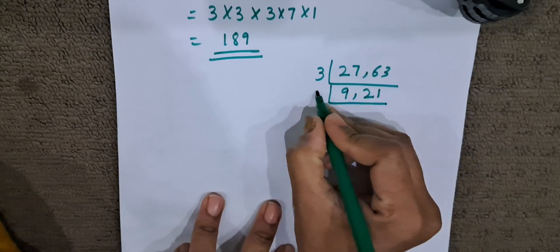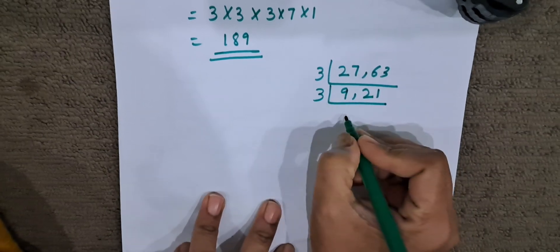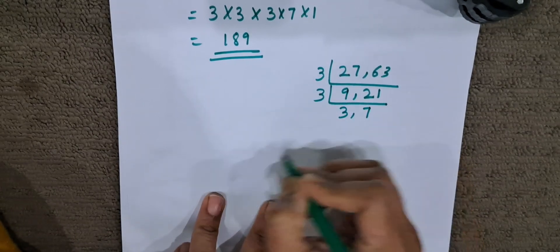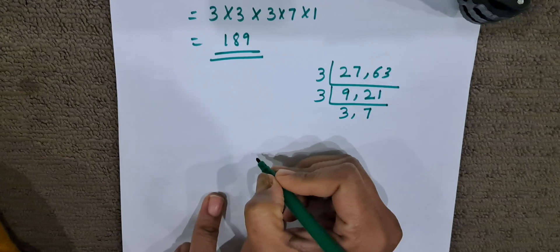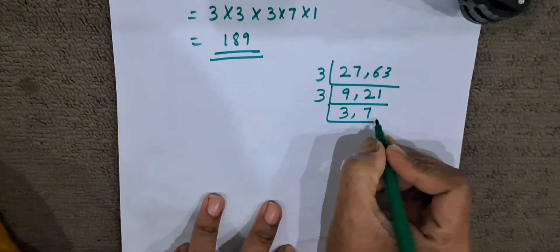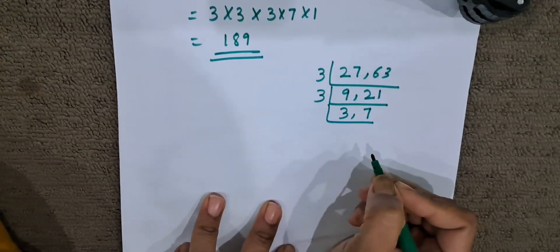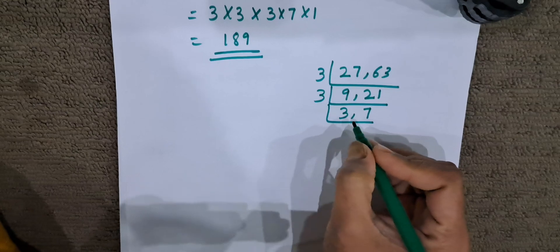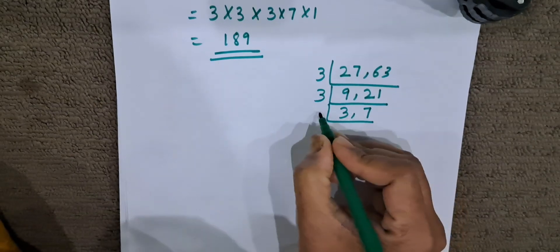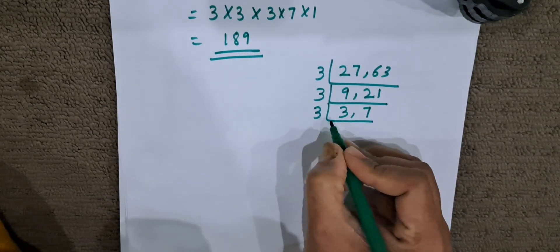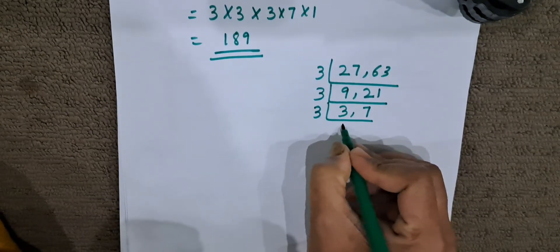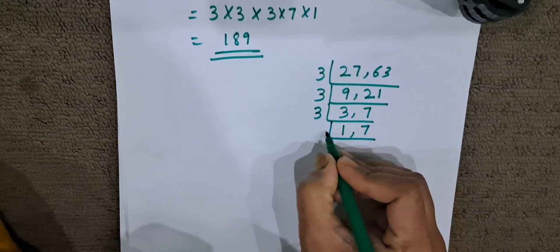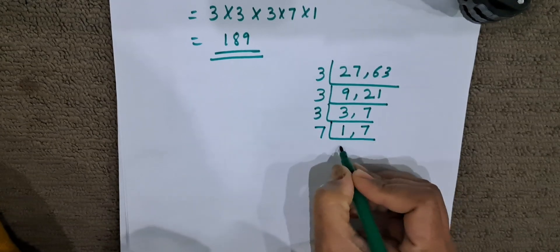Now among 9 and 21, which number is common? It is 3. 3 threes are 9, 3 sevens are 21. Now between these 2, anything is common? No. So we will divide 1 number by the other. 3 divided by 3. Now 7 remains. 7 is divisible only by itself.